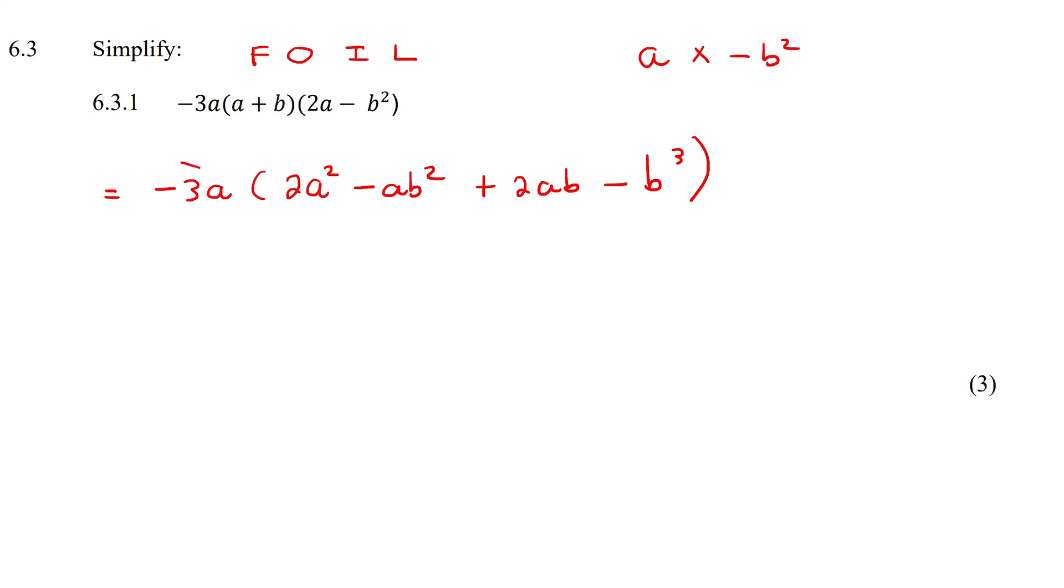Now the last step is to take this one and multiply it inside. Then we have technically multiplied everything. So I'm going to start with this part here. That's going to give you -6a³. Why? Because 3 times 2 is 6, but there's a negative over there. And then a and a² gives you a³ when you're multiplying.